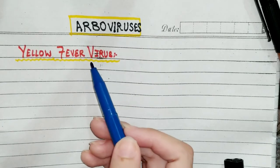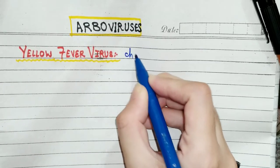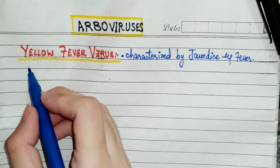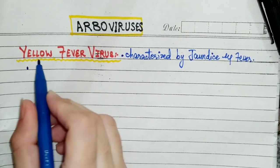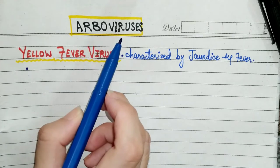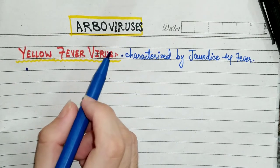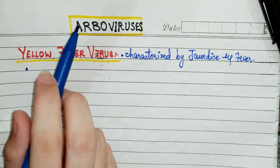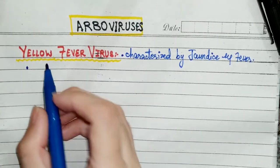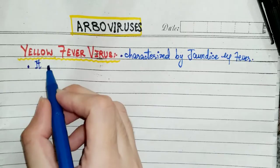As indicated by the name, yellow fever is characterized by jaundice and fever. This yellow fever virus belongs to the arbovirus family, specifically the Flavivirus family — the same family as dengue virus, which we have already discussed.